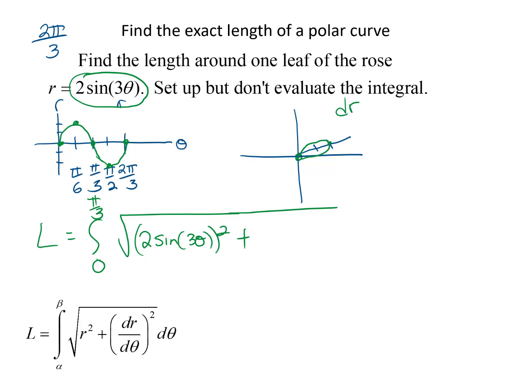That's going to be 2cos(3θ), but the chain rule is going to generate a 3, so that's going to make that multiplied by 3, so that's going to be a 6, so it's going to be 6cos(3θ) squared dθ.